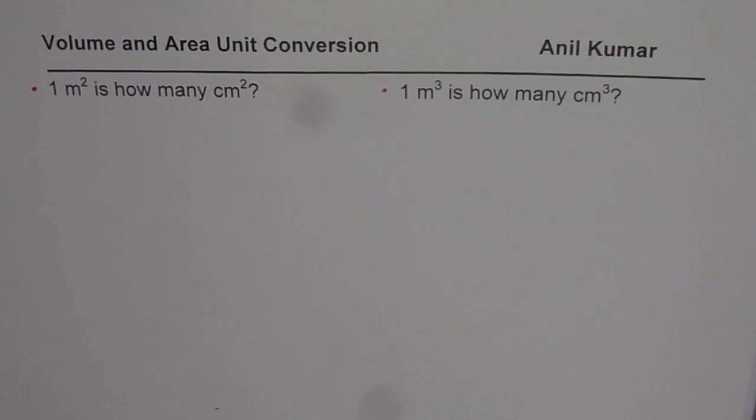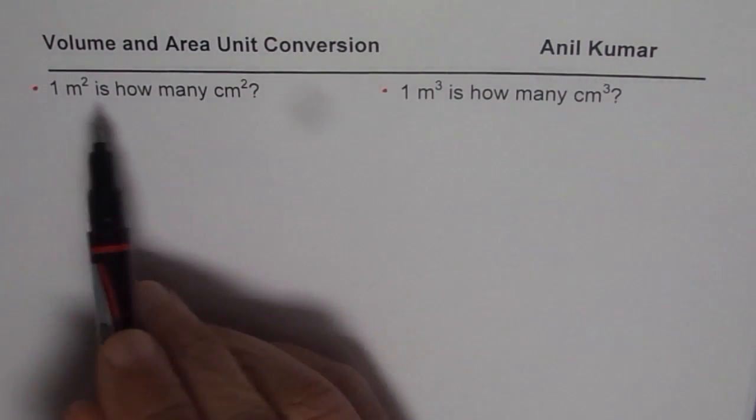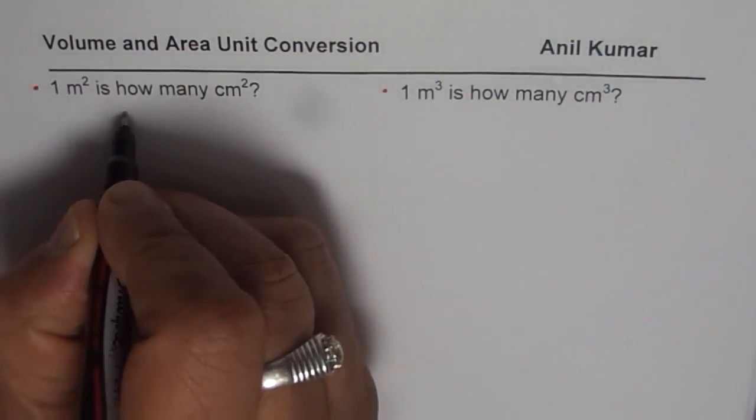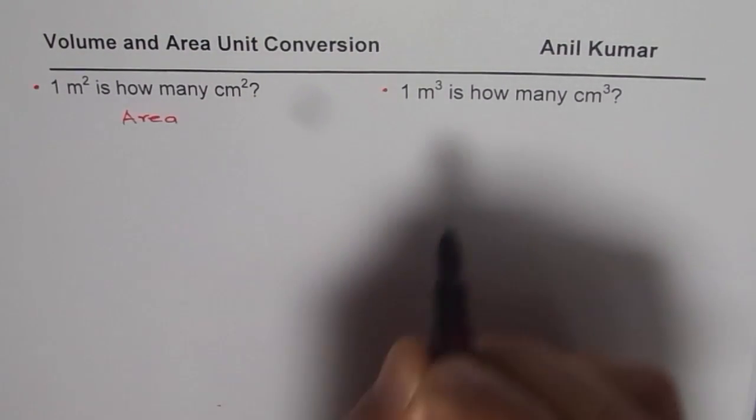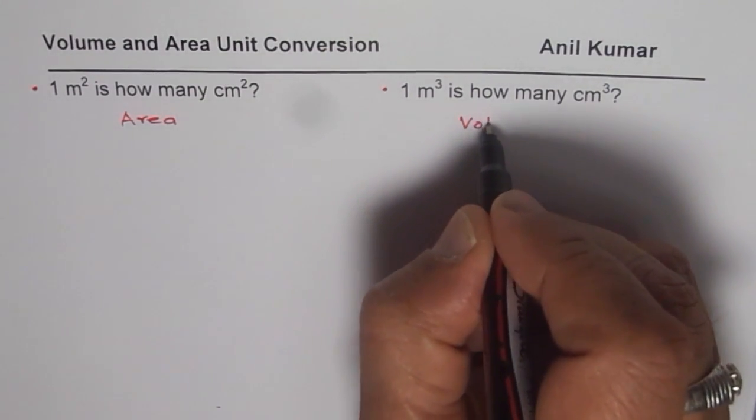I am Anil Kumar and here is the most difficult question on volume and area. It relates to conversion of units. Most of the students learn about area and volume in junior classes and you know the units for area are centimeter square and meter square. So when I write meter square it means area, and meter cube and centimeter cube relates to volume.